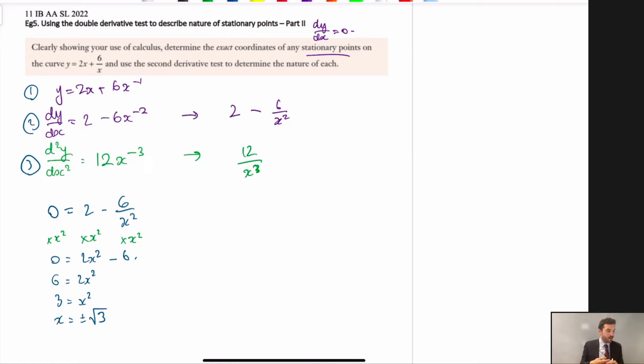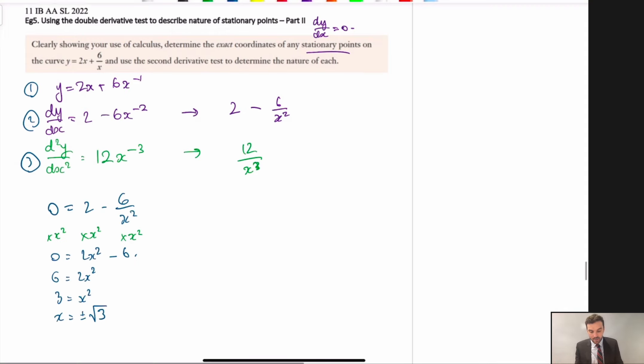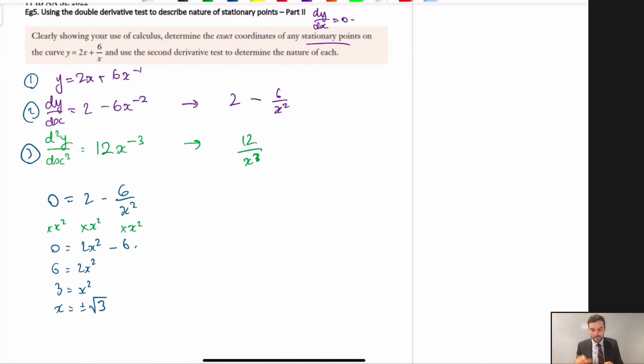So, these represent the possible x values of our stationary points, okay? So, what are we meant to do next? Well, we found that value. Now, let's see the nature of that, and then we'll find the coordinates, okay? So, this is finding the stationary point.